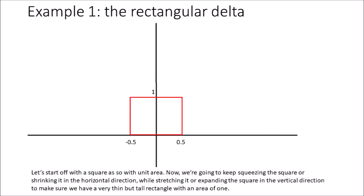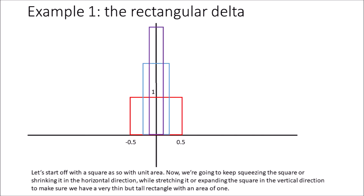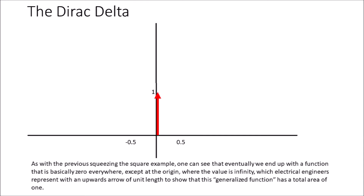Let's start off with a square with unit area. Now we're going to keep squeezing the square, shrinking it in the horizontal direction while stretching it in the vertical direction, to maintain a very thin but tall rectangle with an area of 1. One can see that eventually we end up with a function that is basically 0 everywhere except at the origin, where the value is infinity — which electrical engineers represent with an upwards arrow of unit length to show that this generalized function has a total area of 1.